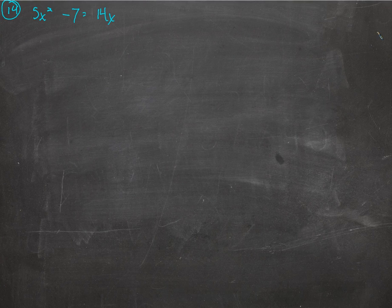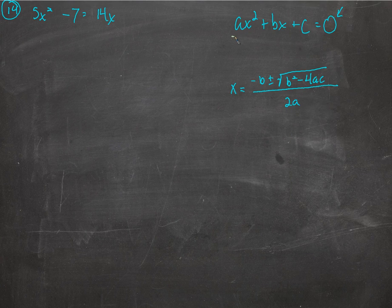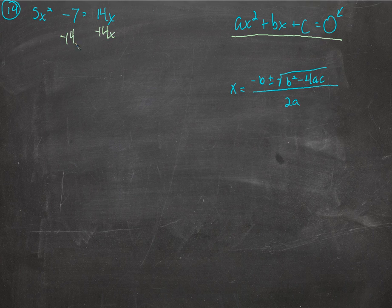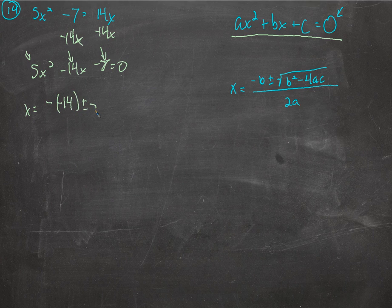Remember, your equation must be written in standard form before you can use the quadratic formula, so we have to have one side equal to 0. We'll subtract 14x from both sides — there are no x's over here, no like terms, so it just gets squeezed in. We'll put it in order: 5x squared minus 14x minus 7. Now we have a, b, and c. So x equals negative negative 14, which is positive 14, plus or minus the square root of negative 14 squared...